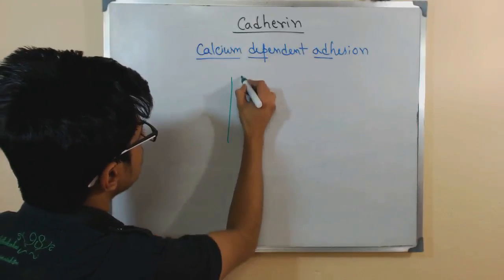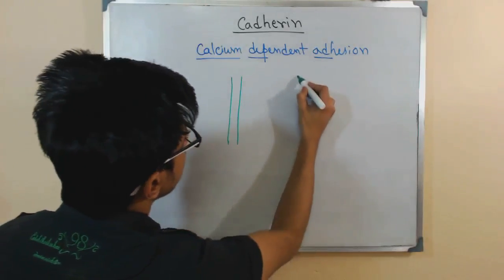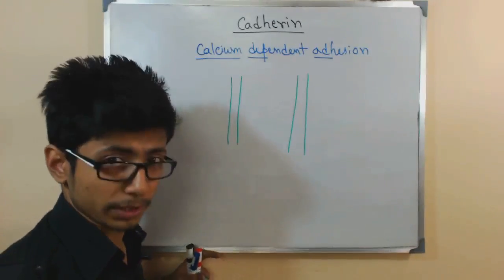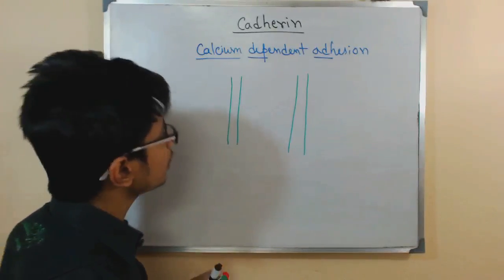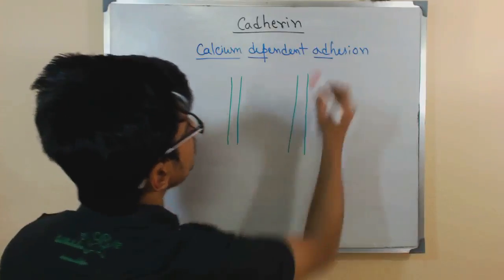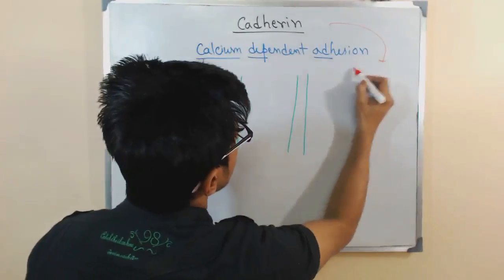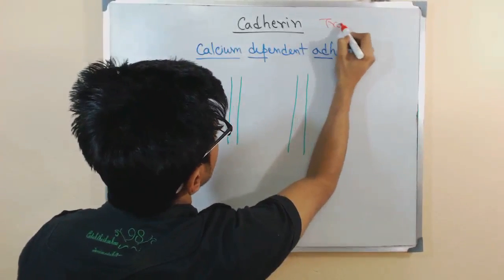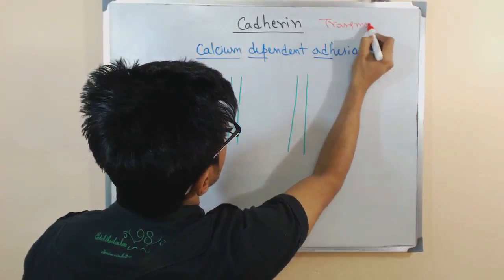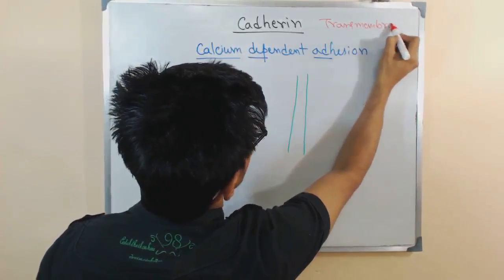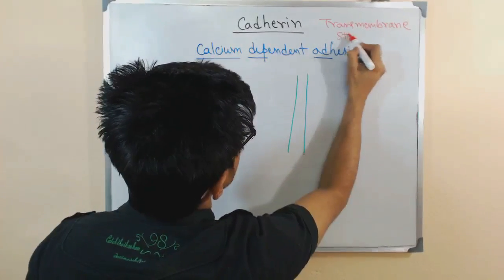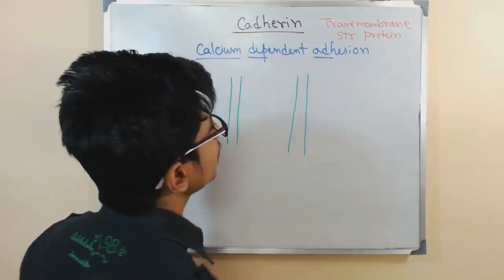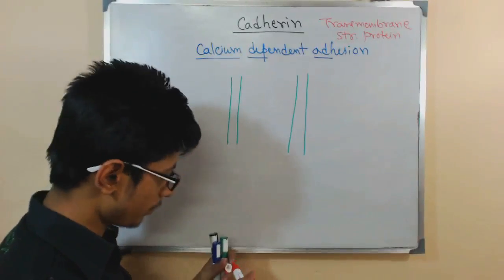Cadherin is a transmembrane protein. It is a transmembrane structural protein.